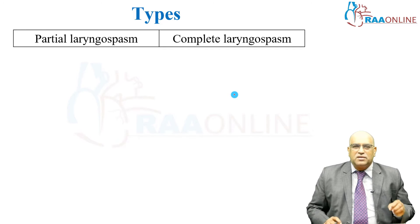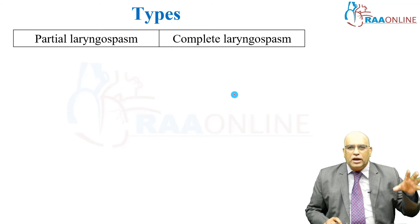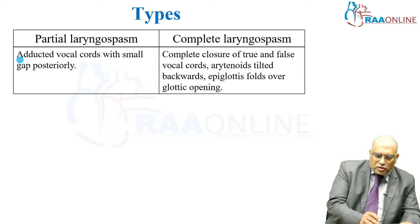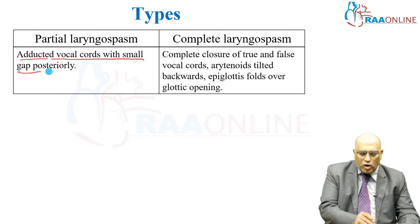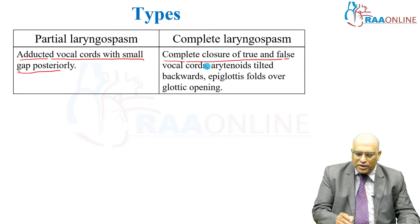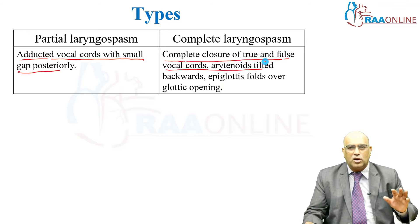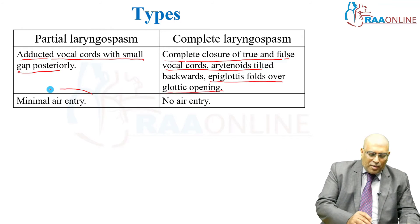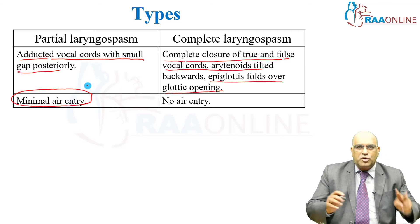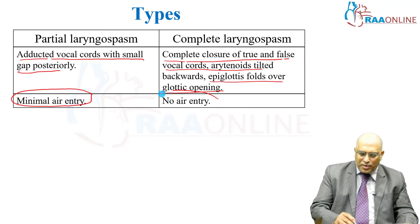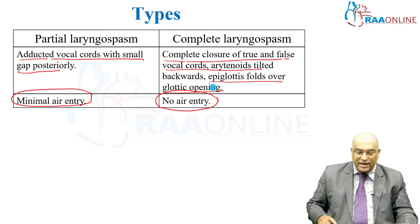Coming to the subtle difference between incomplete and complete laryngospasm: in partial laryngospasm, there is a small gap posteriorly. In complete laryngospasm, there is complete closure of true and false vocal cords. The arytenoids are tilted backward and the epiglottis folds over the glottic opening. In partial laryngospasm, due to the posterior opening, there may be minimal air entry. In complete laryngospasm, there is no air entry.